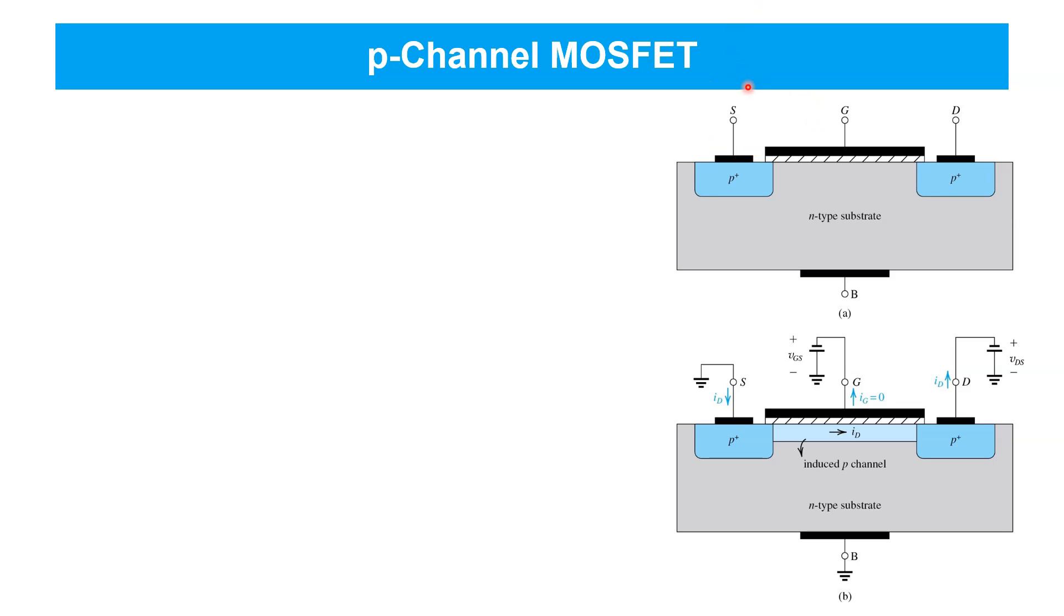In this so-called enhancement mode MOSFET, a sufficiently negative voltage must be applied to the gate to increase the concentration of holes in the channel region and, therefore, create an inverted channel that allows current to flow between the P-type drain and P-type source.